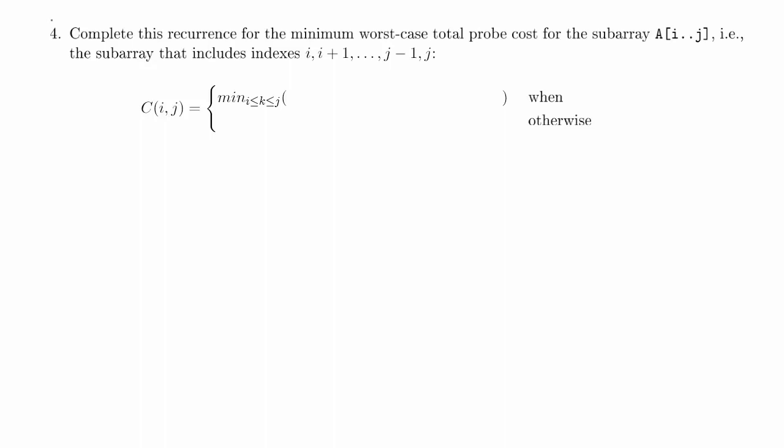So what's it actually asking us to do? Complete this recurrence for the minimum worst-case total probe cost for the subarray a[i..j] — that is, the subarray that includes all indices from i to j, inclusive. That recurrence is basically going to be a recursive algorithm that finds the minimum total probe cost. We've actually been given a really key piece of this recurrence — the most important pieces, in fact. Give a name to the quantity you're looking for and understand what parameters define the different possibilities for that quantity.